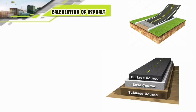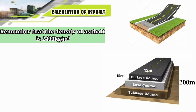Suppose I have a road. The length of the road is 200 meters, the thickness of the asphalt layer is 15 centimeters, and the breadth of the road is 12 meters. We know that the density of asphalt is 2400 kg per cubic meter.